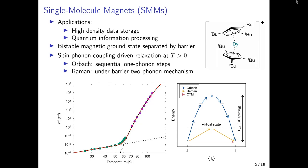In an experiment you will typically see relaxation behavior dependent on temperature, where there is a Raman regime which is linear on a log scale, and then at higher temperature the Orbach process takes over, which has an exponential dependence on temperature.